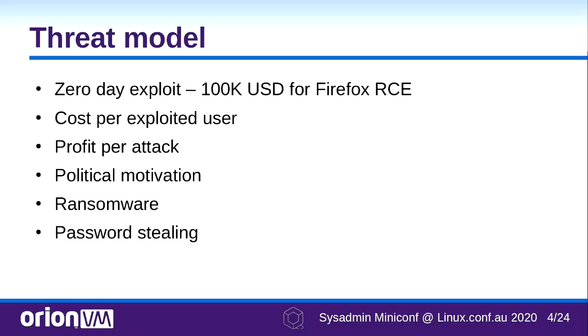The threat model: at its core, you have two curves that are changing. On the one hand, exploits are getting cheaper and more commonplace by the day, which is in and of itself problematic. On the other hand, sysadmins are protecting more and more valuable systems, and more valuable data is being uploaded to them. Between the two of those, you've got a recipe for disaster. My answer to this is Qubes.